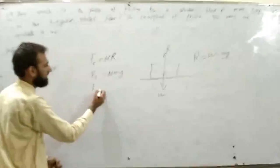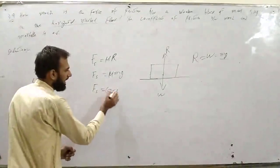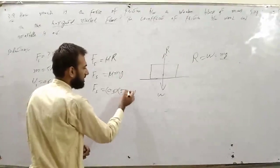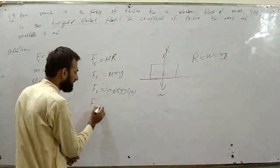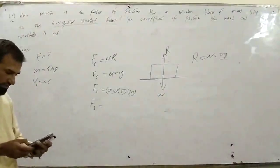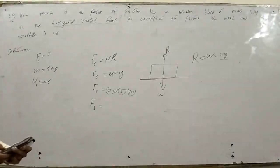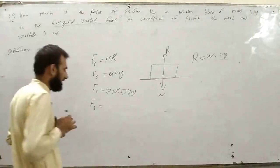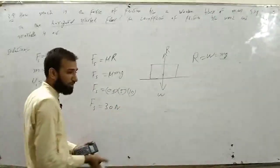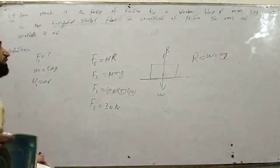W is equal to Mg। R की जगा पे Mg put कर देंगे। Fs is equal to mu × M × g। Coefficient of friction 0.6, mass 5, gravitational acceleration 10 m/s²। Fs = 0.6 × 5 × 10 = 30। आंस आ गया 30 newton। Book से compare करो - 30 newton बिल्कुल correct है।